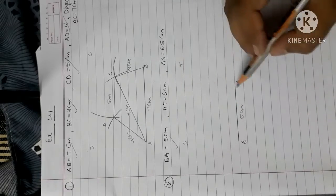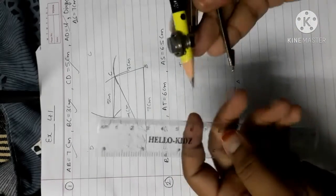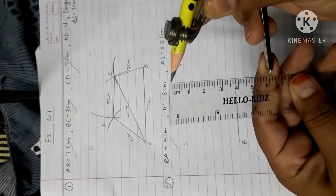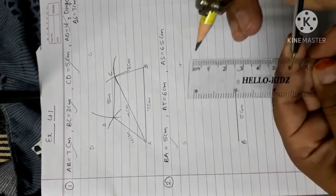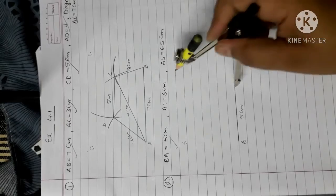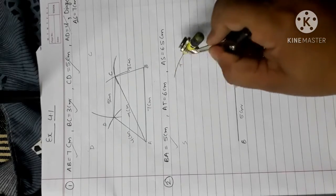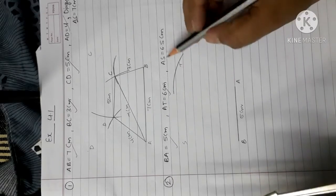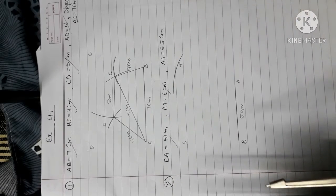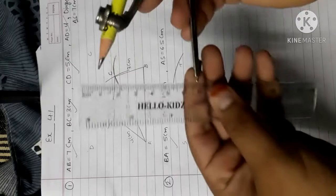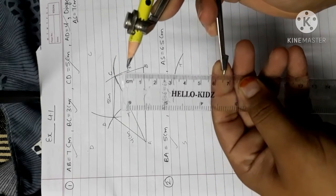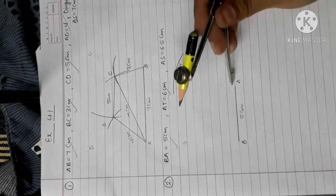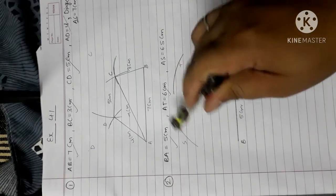AT equals to 6 cm. So again open your compass to 6 cm, then cut it — 6 cm. We have done this. Then AS equals to 6.5. We make the parallelogram with 6.5 cm.